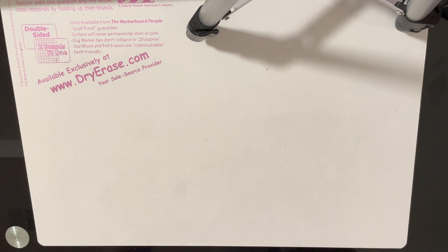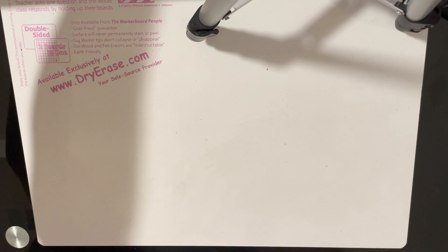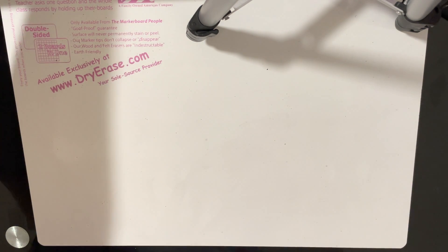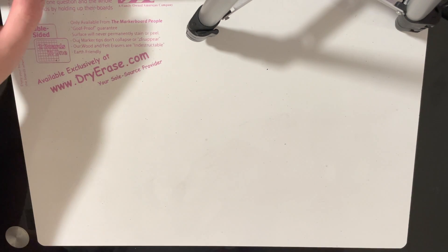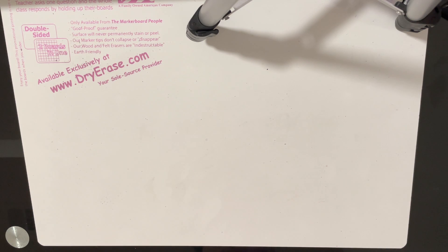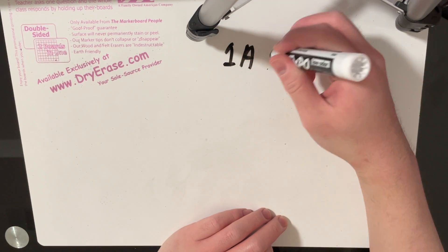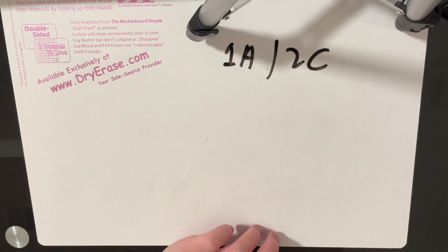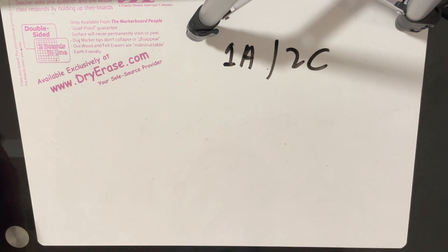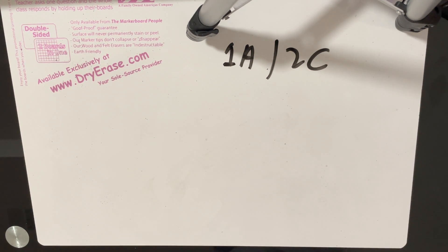Hi everyone. Today I'm going to be talking about the solution to problem 1A slash 2C from Round 736 — 1A is the same problem as 2C, and it's called 'Web of Lies.' As always, if you haven't read the problem yet, go read the problem first before watching this video.